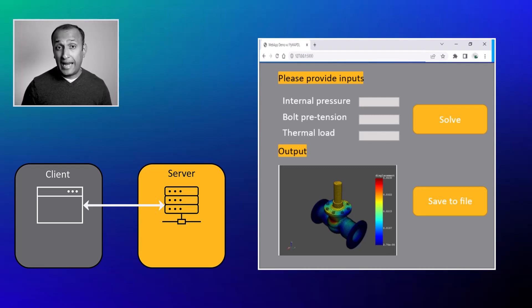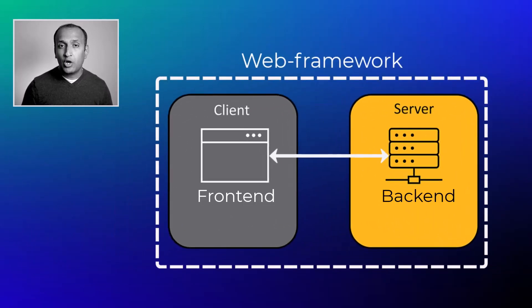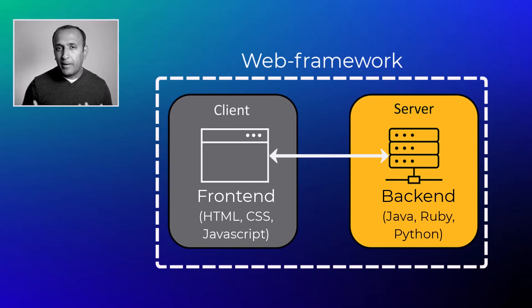The communication between the frontend and the backend is enabled by a web framework. The frontend, backend, and the web framework constitute the basic architecture of a web app. Typically, languages such as HTML, CSS, or JavaScript are used in developing the frontend, and scripting platforms such as Java, Ruby, or Python are used in the backend. Since Python is a popular choice of scripting language, several web frameworks have been developed on the Python platform, allowing popular Python packages for large data and scientific computing to be used in developing backends of advanced web apps. With ANSYS flagship products now available in the Python environment via APIs, they can be integrated into the backend to develop web apps for simulations.